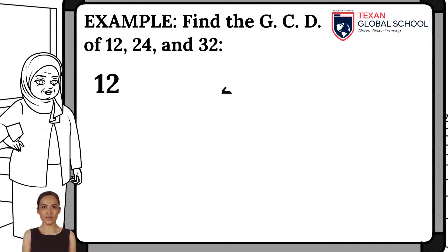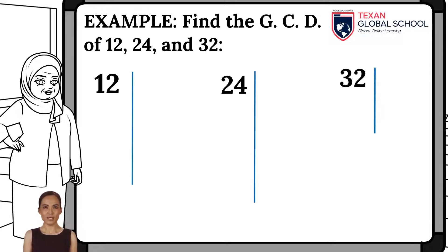Let's look at the first example. We will find the greatest common factor of 12, 24, and 32. As we mentioned in the process, we will obtain the prime factors of each of the numbers separately.